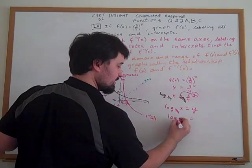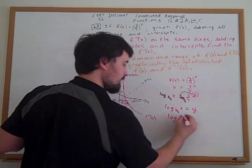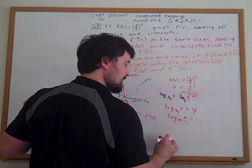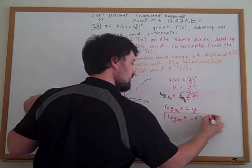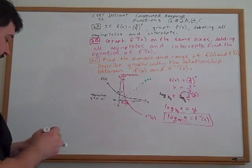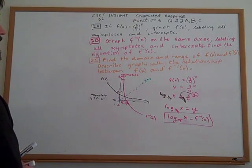I should put that 3 fourths a little bit lower. Maybe even call it .75 power so it's clear. Of x equals f inverse. Now for part c, find the domain and range of f and f inverse.